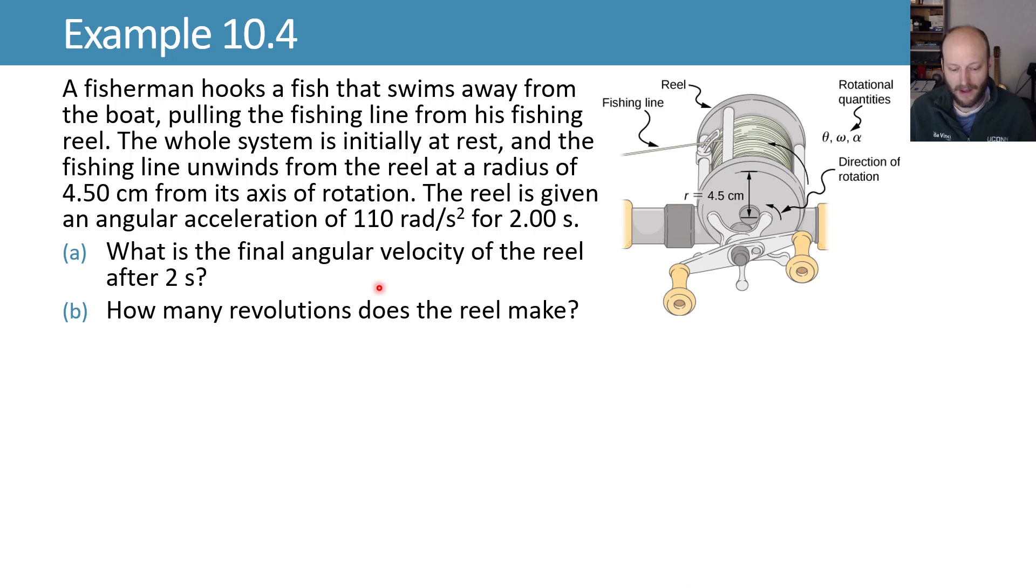Let's consider an example. If we have a fisherman hooking a fish that swims away from the boat, pulling the fishing line from the reel. Well, we have this situation here, and we want to know, after some stuff happens, what's the final angular velocity of the reel after two seconds? We'll start by writing down the things we know. We know we start from rest, so that's an initial velocity of zero. We know the radius is 4.5 centimeters. We know that the angular acceleration is 110 radians per second squared, and we know the time is two seconds. So let's write down all of those things.